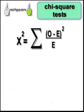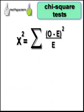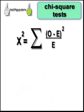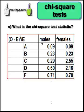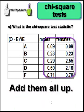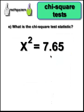Now, let's look at the formula. We subtract the difference between the observed and expected, then square that difference, then divide the squared number by the expected cell value. Then we add them all up — that's what the sigma means. Adding all these up, we get a grand total chi-squared of 7.65.